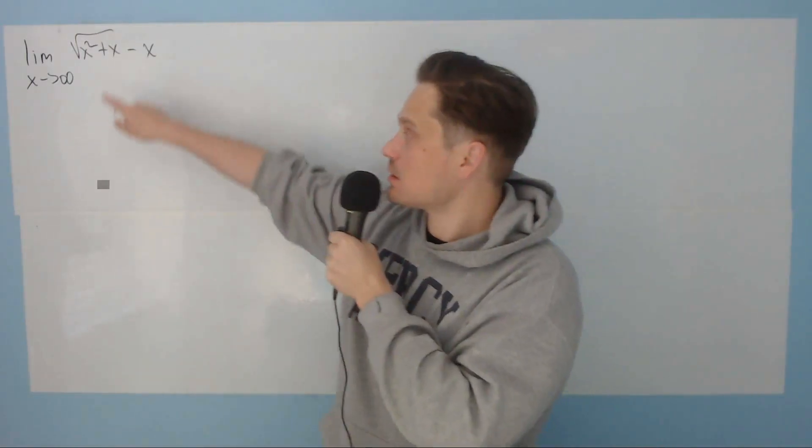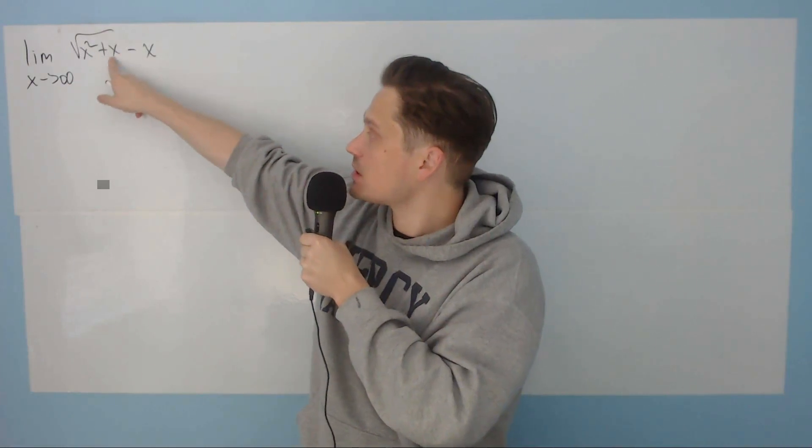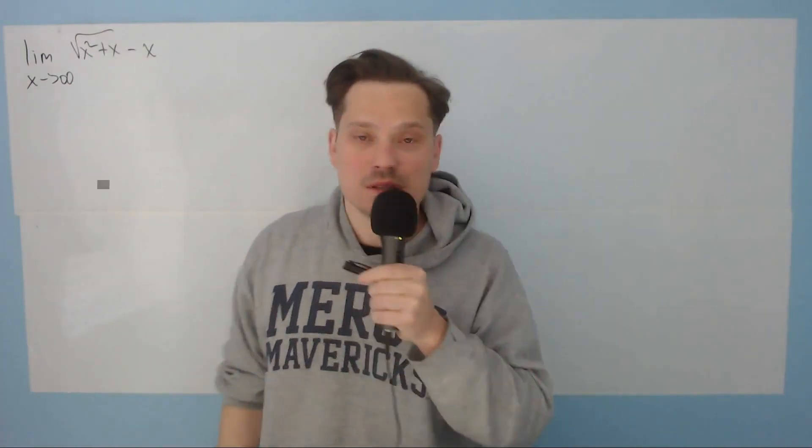In this one, let's take a look at finding this limit, the limit as x goes to positive infinity of the square root of x squared plus x minus x. So it's a bit of an unfold procedure. Let's take a look at it together.